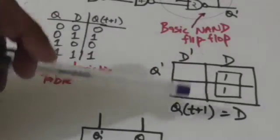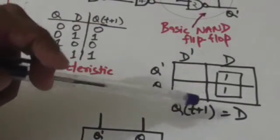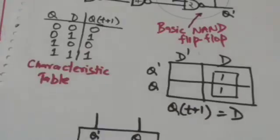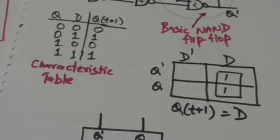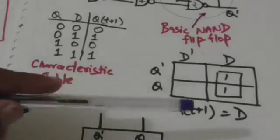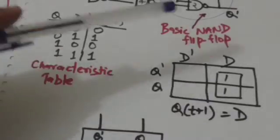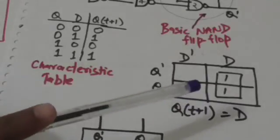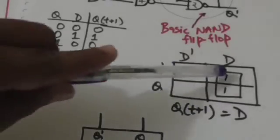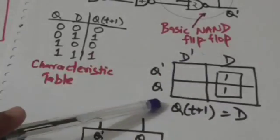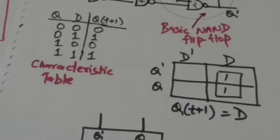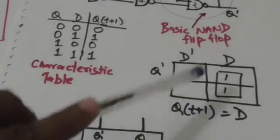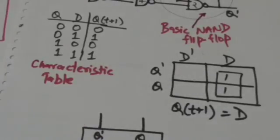This is the characteristic equation: Qt+1 equals D. This is the characteristic equation of the D flip-flop. It is obtained by getting the minimized Boolean function of Qt+1 in terms of Q and D by using a Karnaugh map.